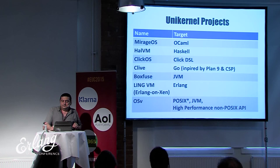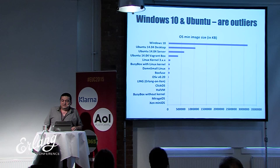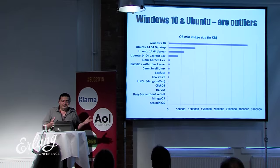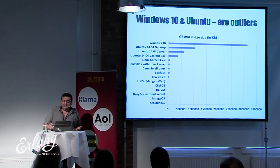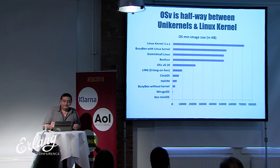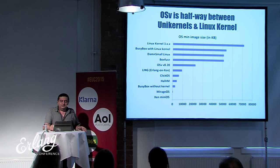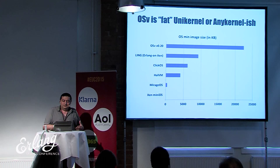I gathered information about minimal image sizes for different operating systems. Desktop OSes like Windows and Ubuntu are too big — outliers. Even so, the OSV Linux kernel is about 70 MB while OSV itself is about 20 MB. OSV sits halfway between unikernels and the Linux kernel by image size, and is sometimes called a 'fat unikernel.'